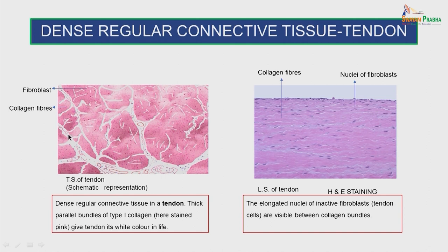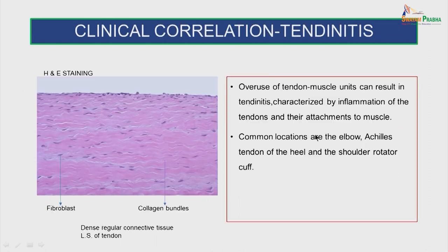This is a tendon. This is a transverse section of tendon showing the dense regular connective tissue, with the thick parallel bundles of Type I collagen stained pink, giving tendon its white color in life. This is a longitudinal section of tendon in an H&E stained slide. The elongated nuclei of the inactive fibroblasts are seen within the collagen bundles. Clinical correlation: tendonitis — that is overuse of the tendon. Overuse of the muscle units can result in tendonitis, characterized by inflammation of the tendons and their attachments to muscle. Common locations are the elbow, the Achilles tendon of the heel and the shoulder rotator cuff.